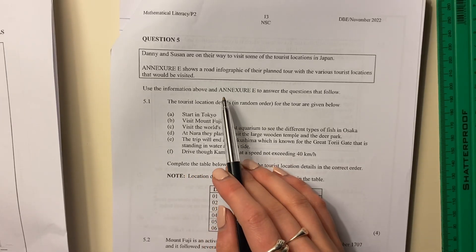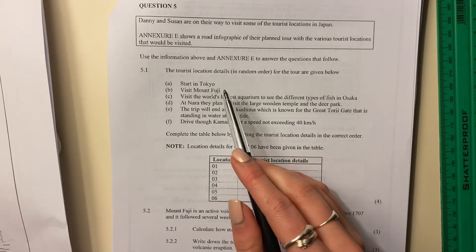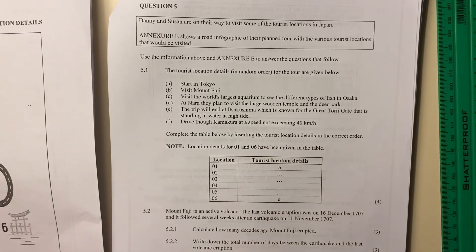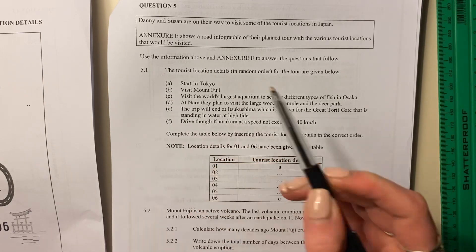Right, use the information above and Annexure E to answer the questions that follow. The tourist location details in random order for the tour are given below. Okay, A, B, C, D, E, and F.